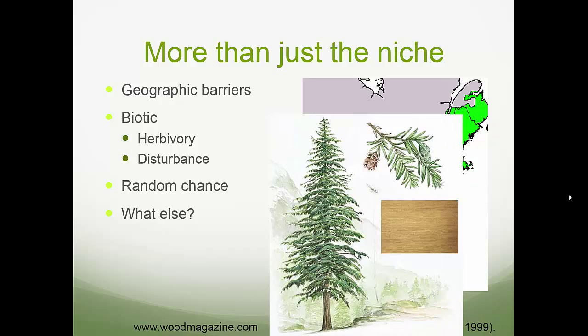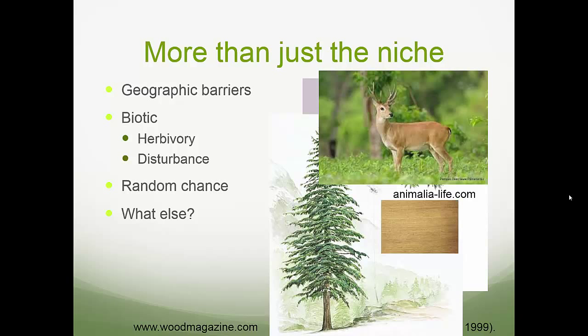We also have to consider biotic factors. Eastern hemlock has herbivory and disturbance influencing its distribution — deer love eastern hemlock and will mow it down, and there's also the hemlock woolly adelgid. These biotic interactions influence where the species can compete. And of course there's random chance. All of these things — abiotic factors like climate, biotic interactions, and chance — influence the distribution of tree species.